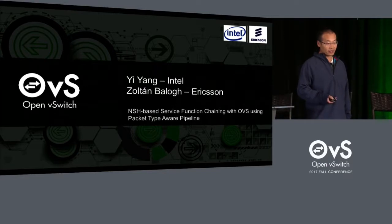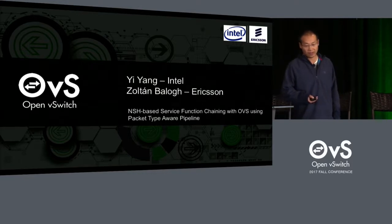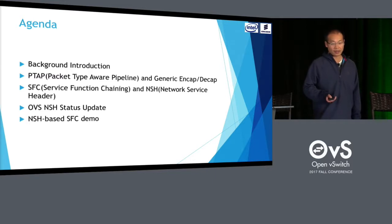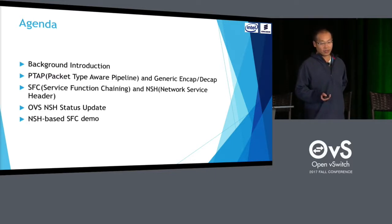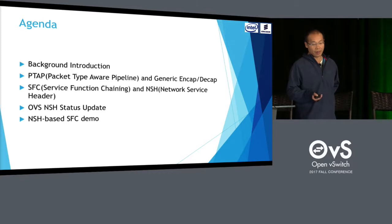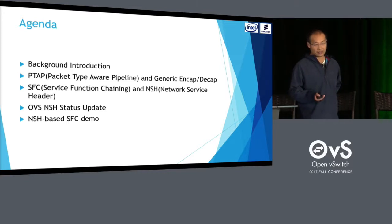Today our topic is NSH-based service function chaining with OVS by using packet type pipeline. NSH is a new protocol especially for service function — it's a network service header. Here is the agenda. First, Zoltan will introduce the background of why we do PTAP and generic encap/decap, and the implementation details. Then I will introduce service function chaining and the network service header. I will also update current OVS NSH implementations, and lastly demonstrate NSH-based service function chaining.